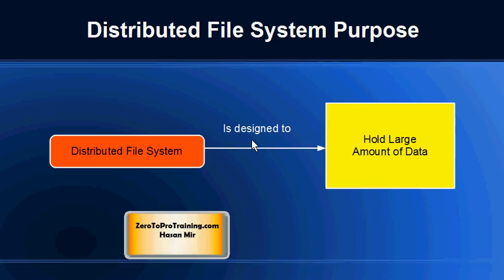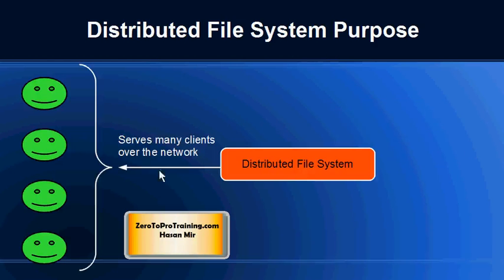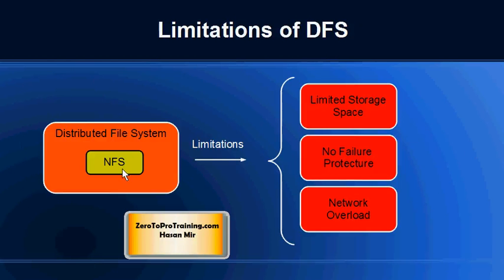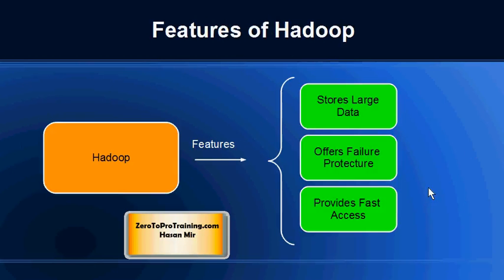From the previous sessions we understand that distributed file systems were created to hold large amounts of data and to serve large numbers of clients. Network File System (NFS) is one of the most popular types of distributed file systems in use. However, it has some limitations: it can hold a limited amount of data, it does not offer any protection against hardware failures, and it could result in possible network overloads.